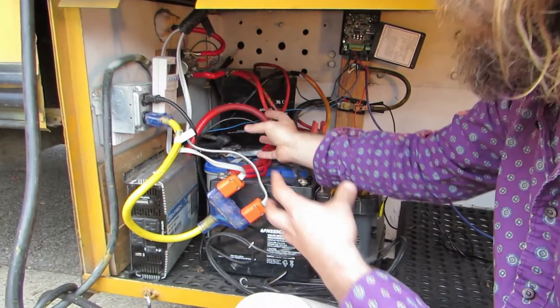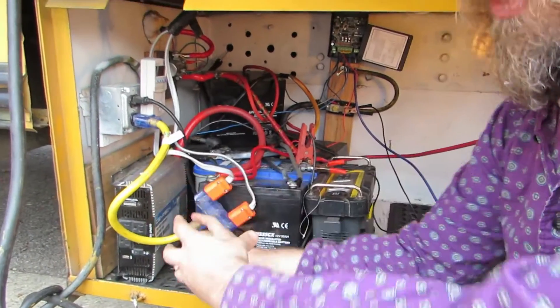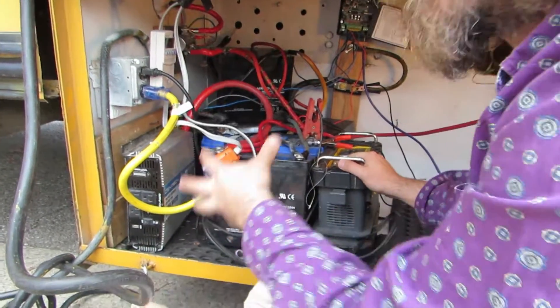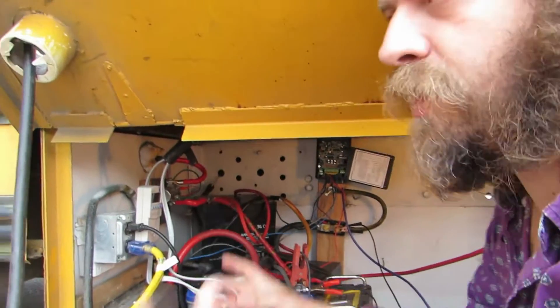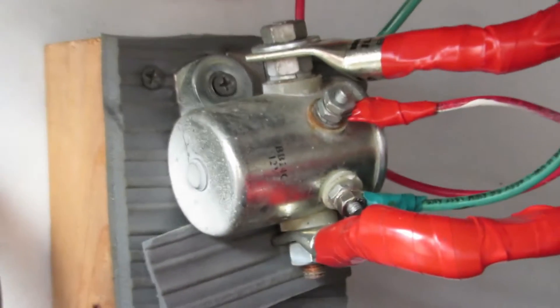And by measuring the current leaving the batteries destined for the inverter, and then also measuring the current that the devices connected to the inverter are using, we can know the efficiency of the inverter. Now, let's look over here.